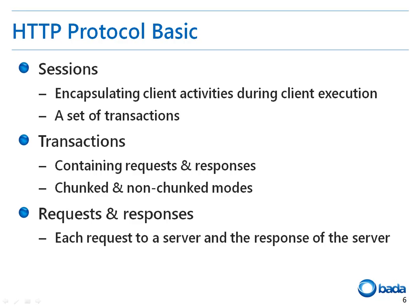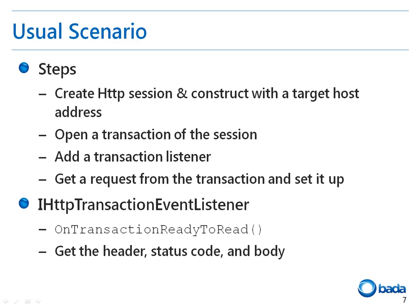Now let's look at how we can actually use HTTP. To use the HTTP protocol, we have to create an HTTP session. We can create a session by specifying the address of the target host. Then, a transaction within this session is opened and a listener to this transaction is added. To acquire necessary data, we have to get the request from the transaction and set the parameters required for the request. The transaction's listener is IHTTPTransactionEventListener. If the response to the request arrives from the server, the onTransactionReadyToRead function is called. At this time, you can get the header, status code, and body information from the response.